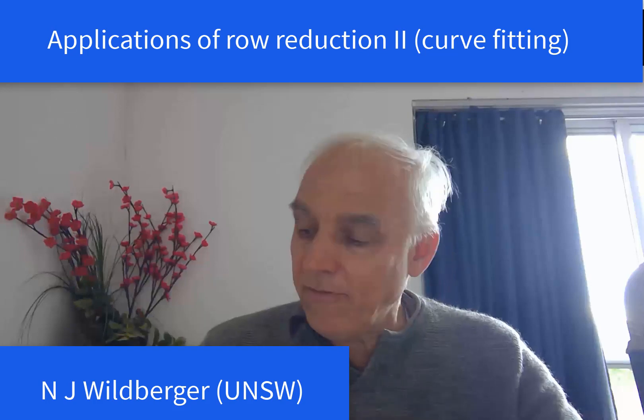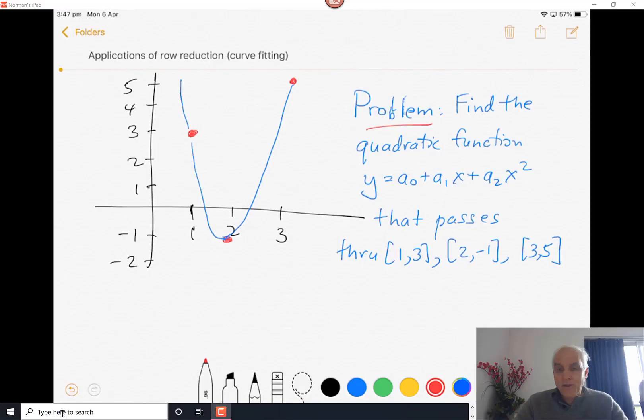So this is a very simple problem that we have in front of us here: to find the quadratic function y equals a0 plus a1x plus a2x squared that passes through three given points - point (1,3), the point (2,-1), and the point (3,5).